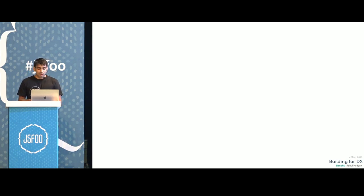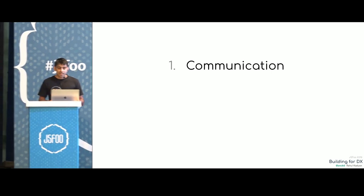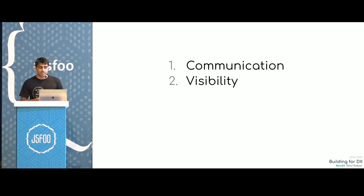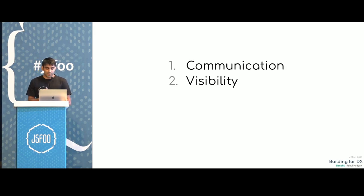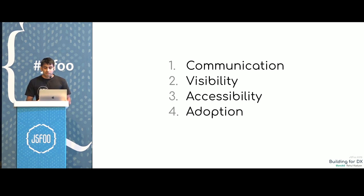Over the last year and a half, we found things that helped us really well. The most important was communication — communicating all decisions and ideas better can reduce inconsistencies. Another thing was visibility — that's really big. Then accessibility, which I mean slightly differently from the common perceived meaning. Adoption. And feedback — feedback is the most important one.